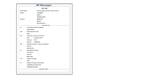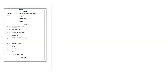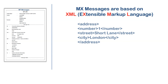The new age MX messages are based on XML, or extensible markup language. Notice that here there is a separate tag for each piece of information related to a particular data element. Each component of an address — like number, street, or city — is separately identified using tags.